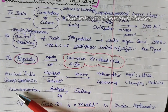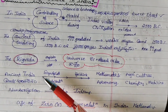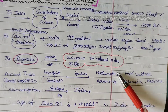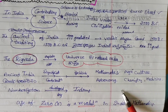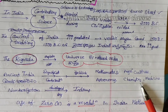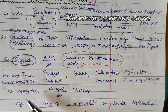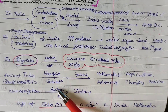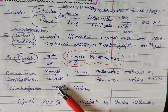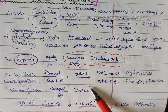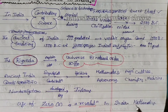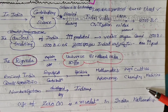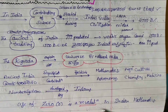Ancient India has made significant contributions to the fields of mathematics, astronomy, agriculture, and chemistry. The major difference lies in a humanizing vision and transformation of knowledge into practical actions.